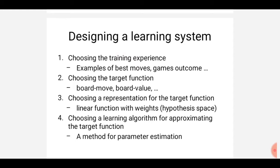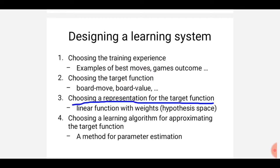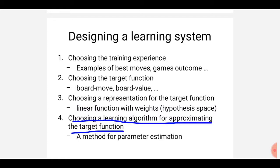To design a particular learning system and get a successful application, we need to consider some steps. These are the steps: first one is choosing the training experience, second one is choosing the target function, third one is choosing a representation for the target function, fourth one is choosing a learning algorithm for approximating the target function. If you complete these four steps successfully, then you will get the final design, which is the perfect learning system.